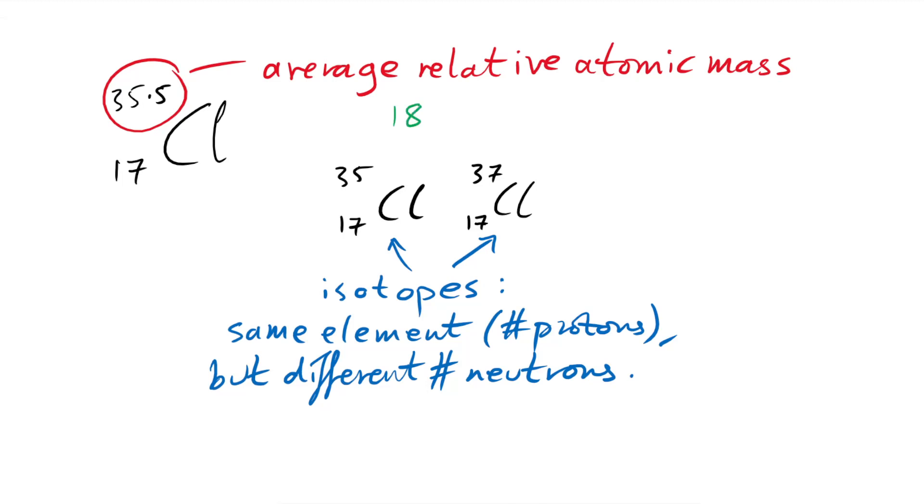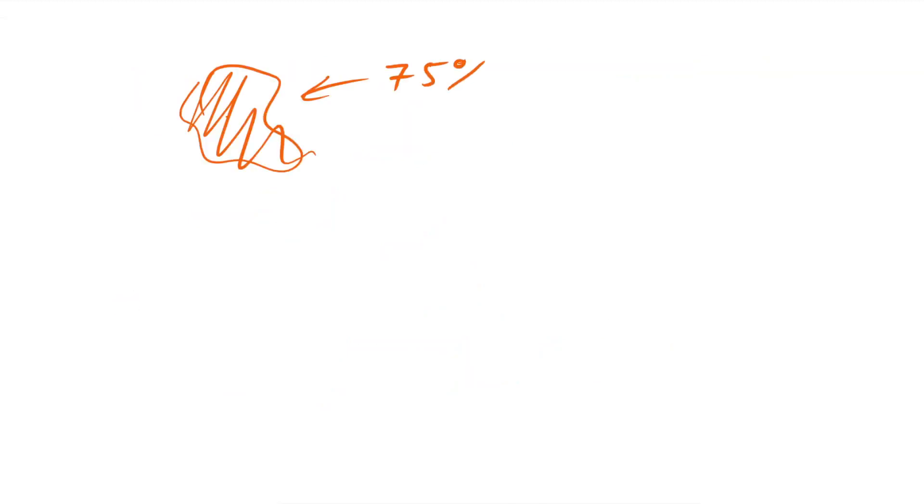This isotope on the left has 18 neutrons. This isotope on the right has 20 neutrons. When you get some chlorine, you won't just have one isotope in there. Generally the isotope on the left is more common, or more abundant. You'll find that you have 75% of these chlorine-35 atoms, and the other 25% are these chlorine-37 atoms.